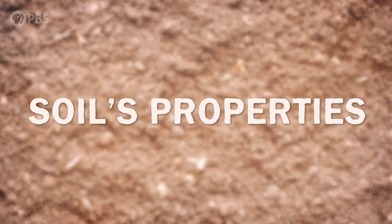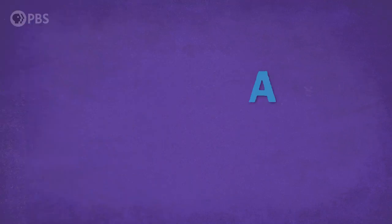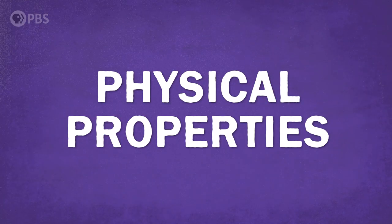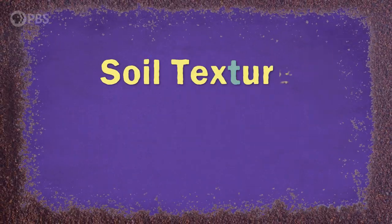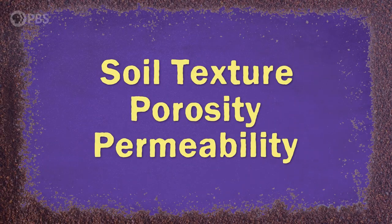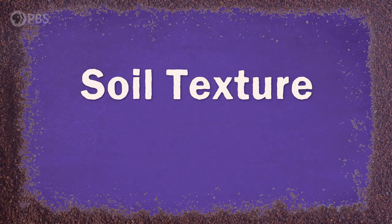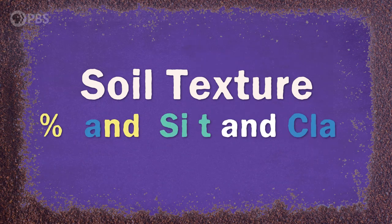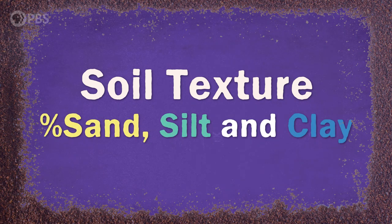But why do we care that there are these different types of soil? Because each type does different things, and we — and other species — use them differently, and that all comes down to the soil's properties. We'll start with the physical properties: soil texture, porosity, and permeability. Soil texture is determined by the percentages of sand, silt, and clay — those weathered-down tiny pieces of rock that make up the soil.